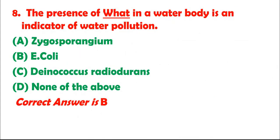Question 8: The presence of what in a water body is an indicator of water pollution? A. Zygosporangium. B. E. coli. C. Deinococcus radiodurans. D. None of the above. Correct answer is B.